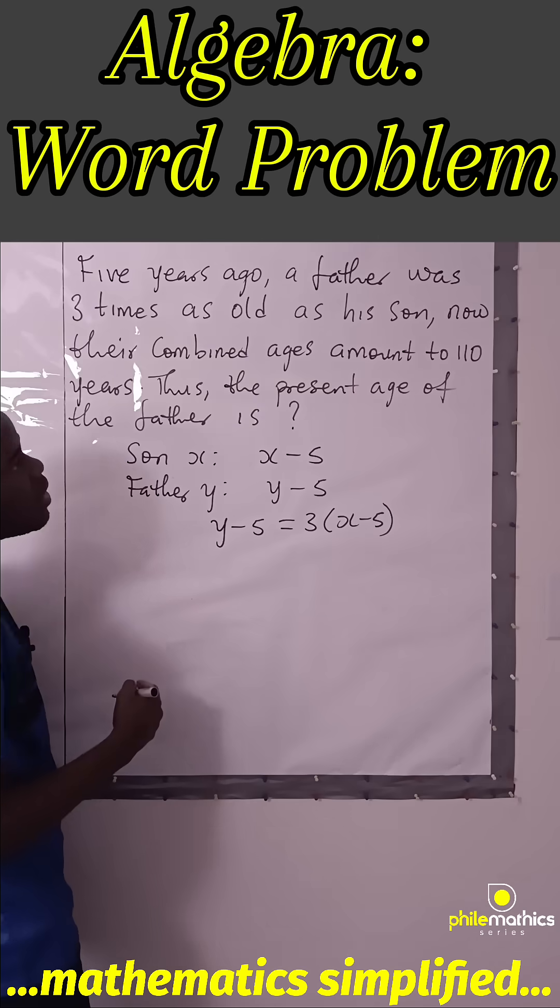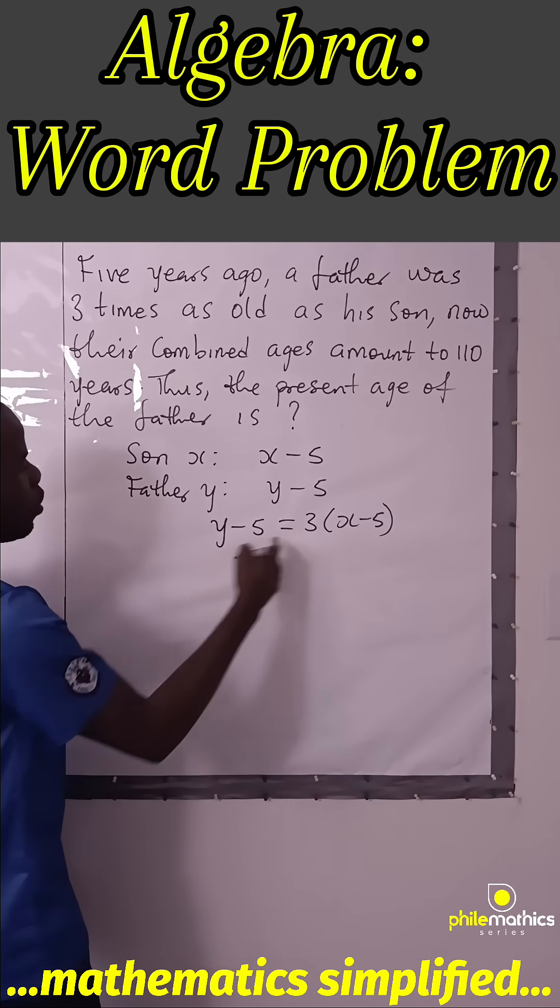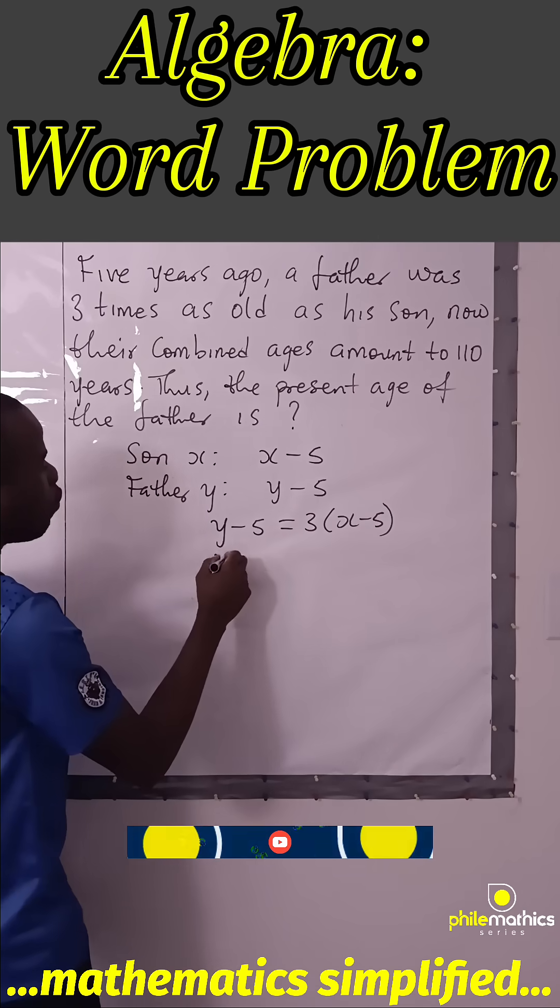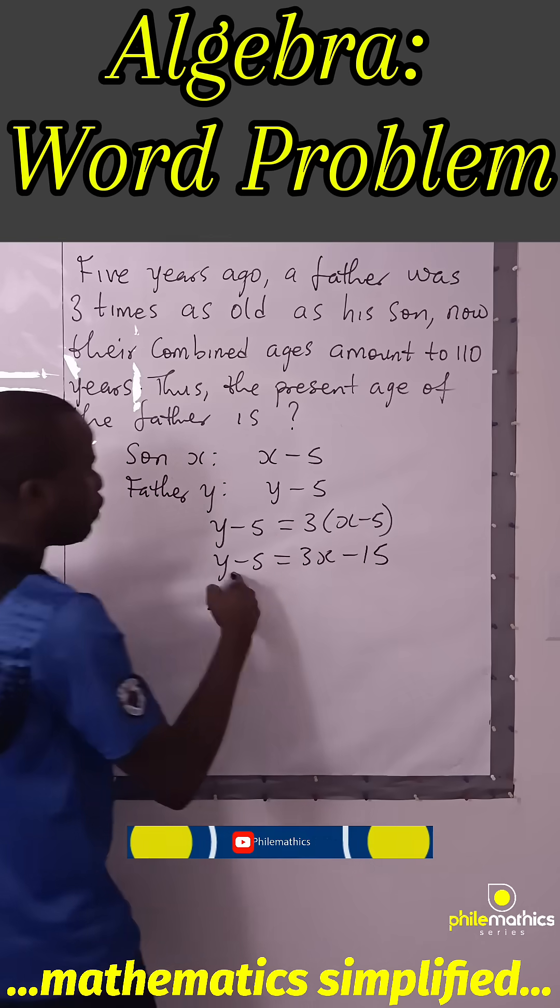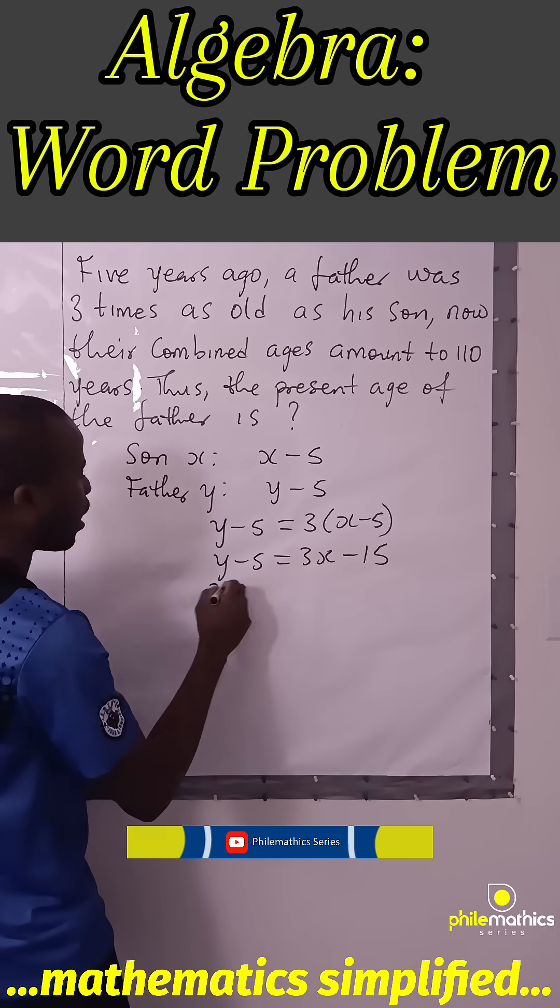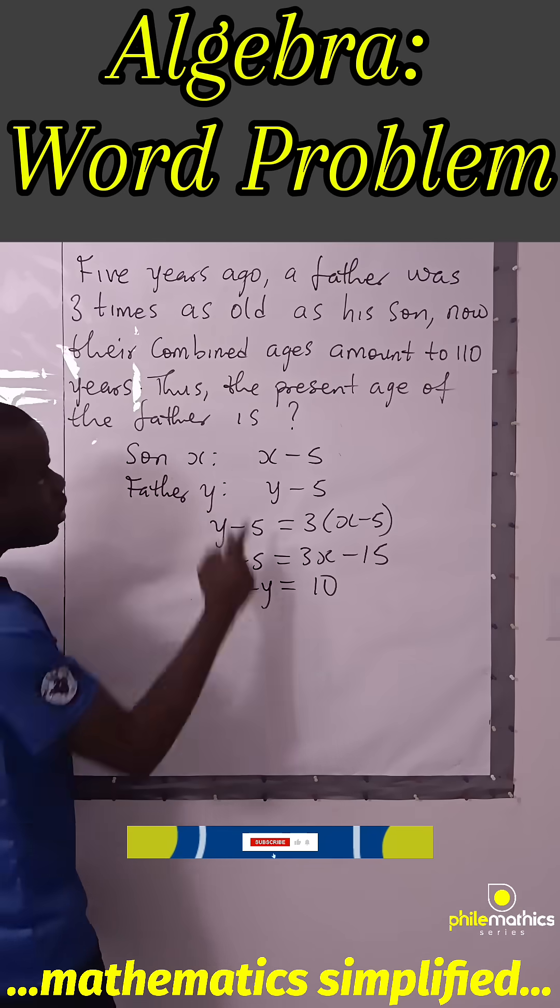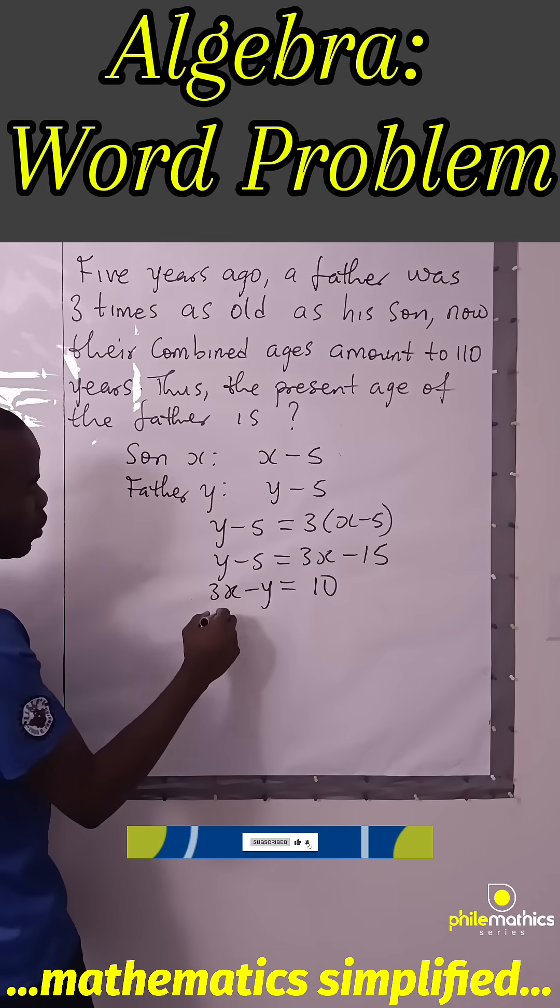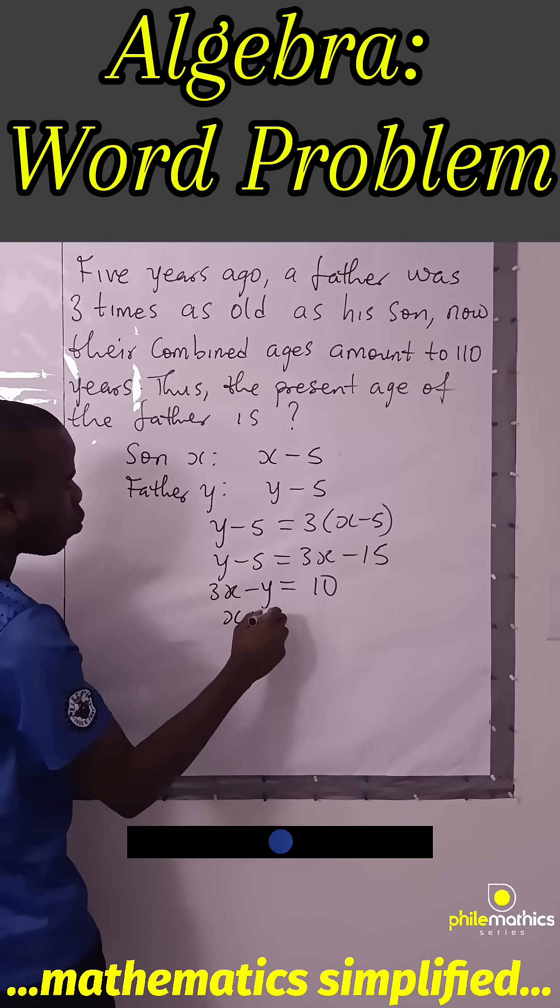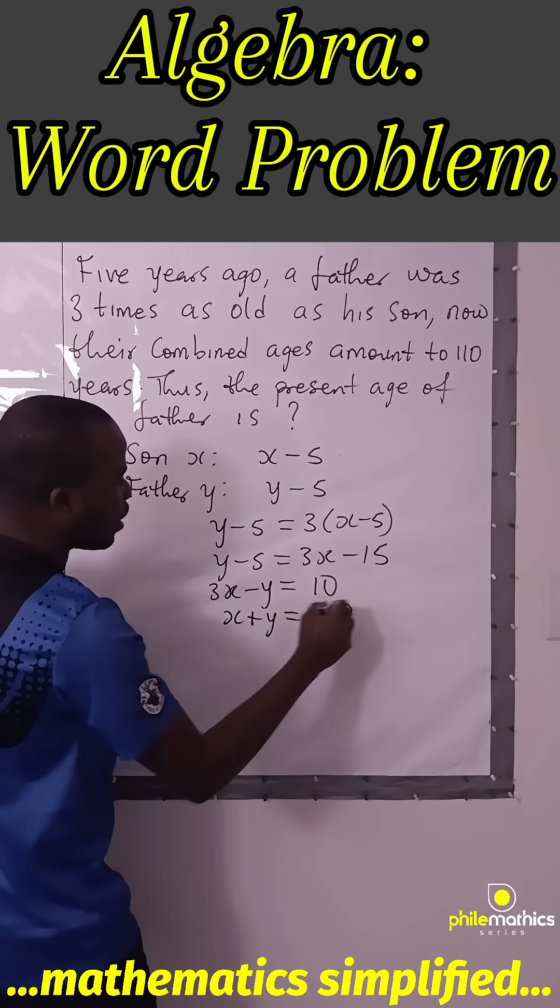And their combined age is 110 years. If you sum this up, if you open this bracket... If you take Y to the other side... But the sum of their combined ages is 110, so we have X plus Y is 110 years.